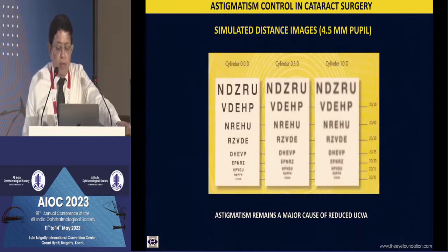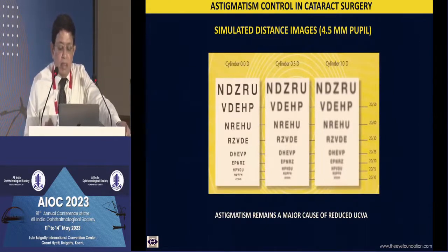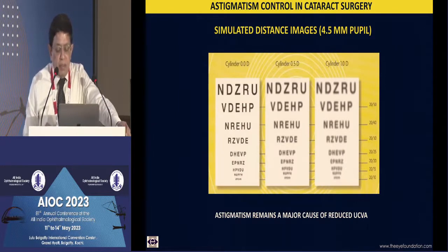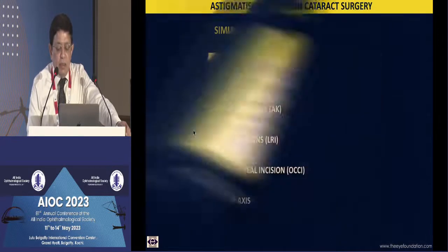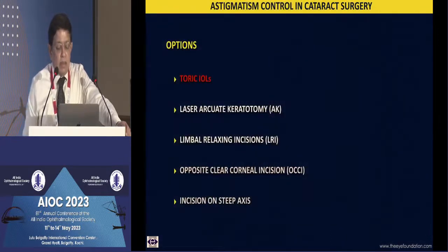Even 0.5 diopters of uncorrected cylinder, when the pupil is about 4.5 millimeters — which is often the ambient pupil size — can cause significant deterioration in the quality of vision, and that is the reason you need to address this quite adequately.